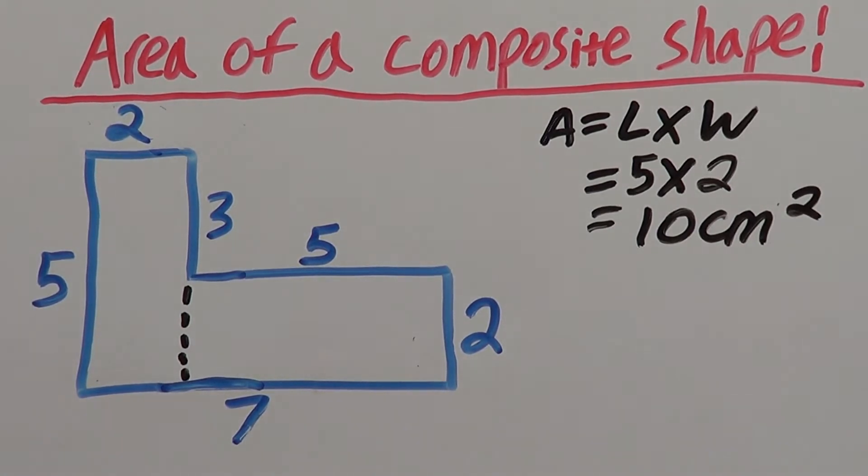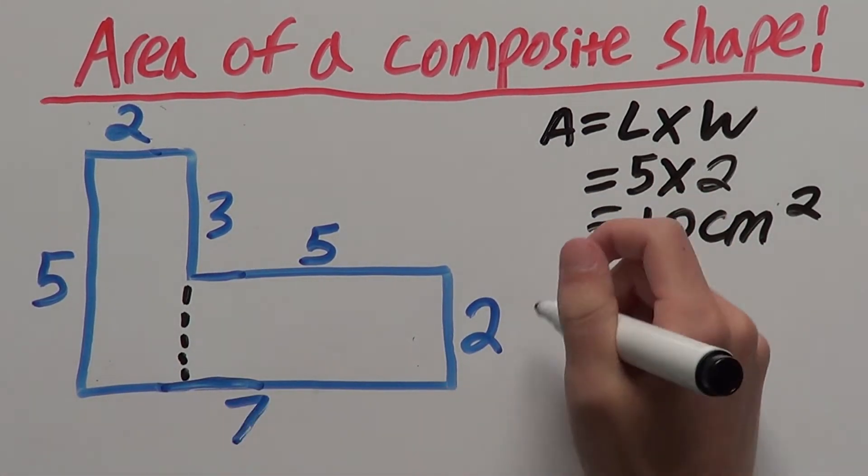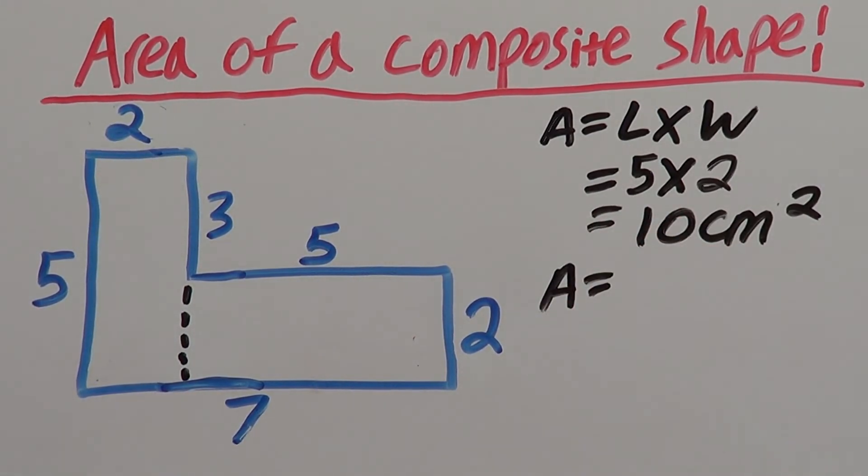And now we need to find the area of our second rectangle which is here. So, again length times width. We get area equals our length.